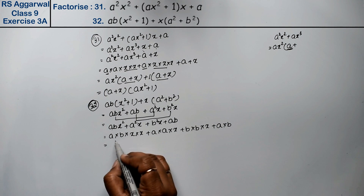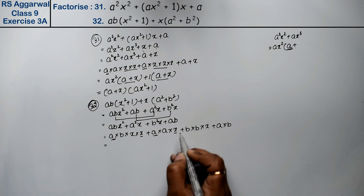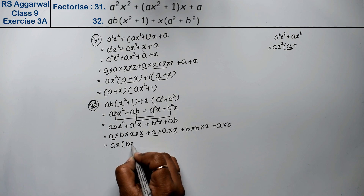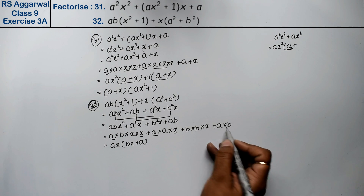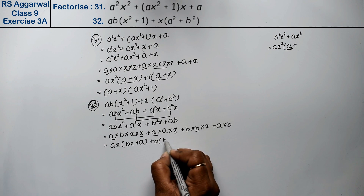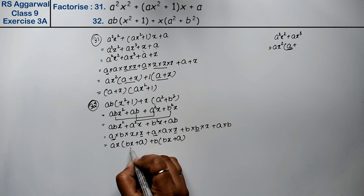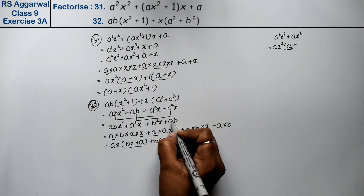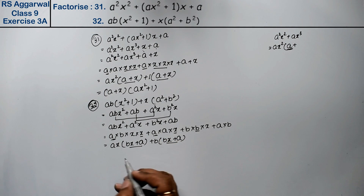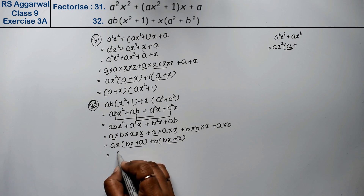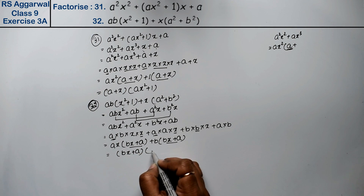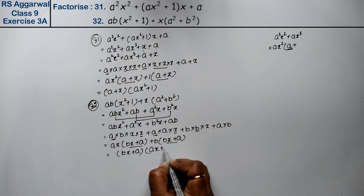Now if we take both of these parts, a and ax are common — so ax is common, and what is left is bx plus a. Then taking b as common from the remaining two terms, we write bx plus a. Both groups give bx plus a, so they are the same. Therefore bx plus a is the common factor, and the final answer is ax plus b, multiplied by bx plus a.